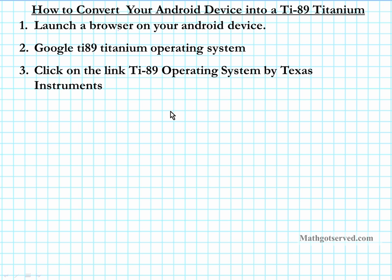You're going to have a lot of results. The result you want to click on is the TI-89 Operating System link by Texas Instruments. Make sure you go to the official site — it's going to be education.ti.com followed by a lot of letters. There are third-party sites that provide this operating system, but they come with viruses and malware that could damage your device. Make sure you're downloading from the official Texas Instruments site.